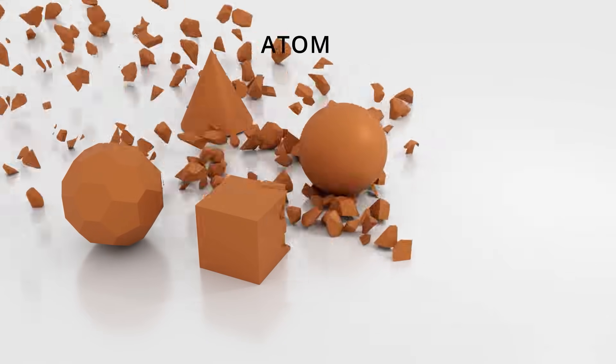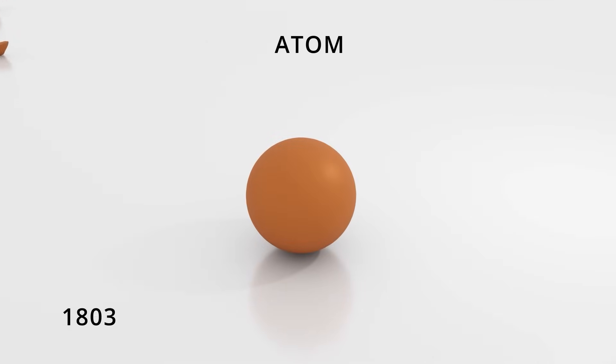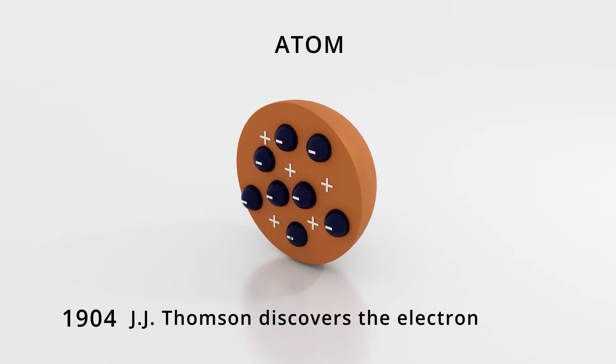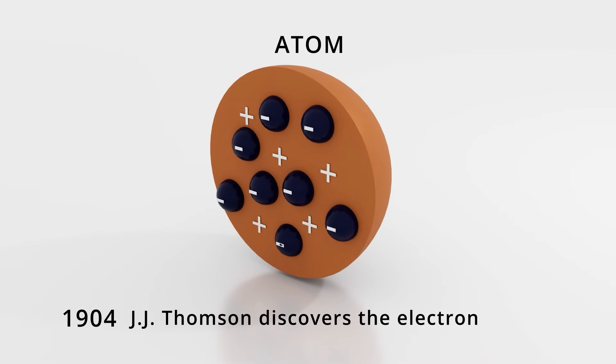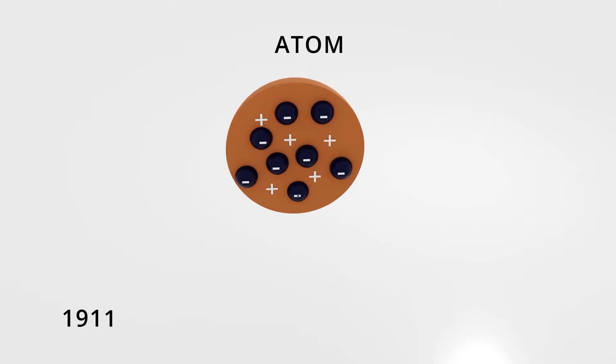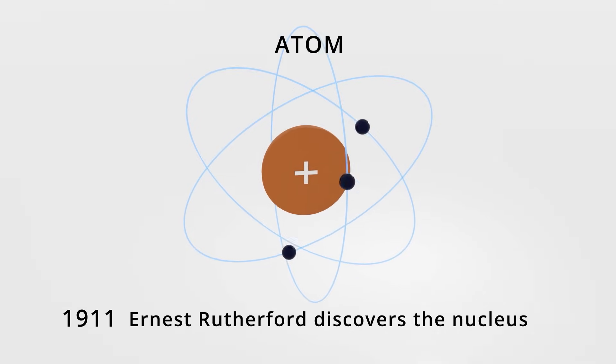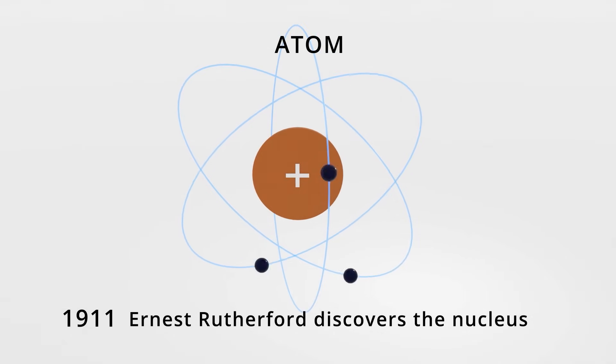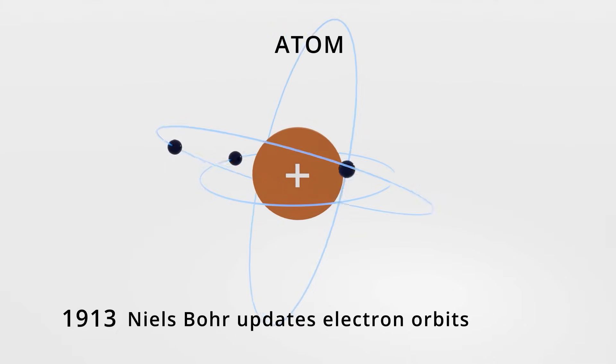Over two millennia later, these shapes were unified into solid spheres. Around 1900, the electron was discovered, which was proposed to exist scattered within the sphere. A few years later, the nucleus was discovered, and the model evolved to electrons traveling in fixed orbits around the nucleus.